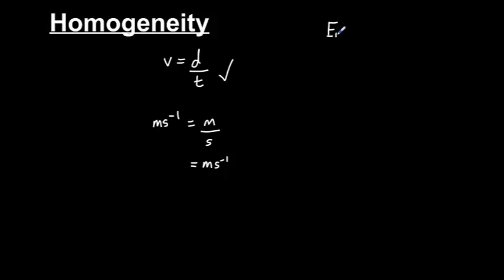So kinetic energy equals half mass times velocity squared. To begin with, we need to find out what each unit is here. So on this side of the equation, we have the joule, which is the SI-derived unit for energy.